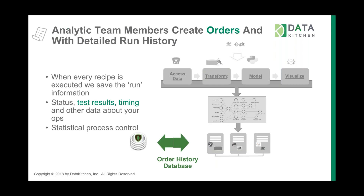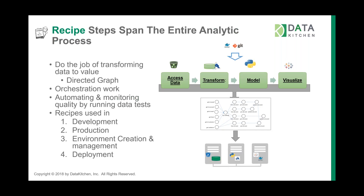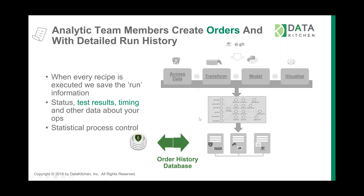When you run a recipe, you create an order, and that order is stored in a Mongo database. The recipe itself comes from Git — it's stored in GitHub Enterprise — and if it has Docker containers, those come from one or more Docker hubs. The order is a document in Mongo that stores the running results: timing results, test results, any metadata. It doesn't store data; it stores metadata about the run. Because we keep track of those over time, that allows you to look at patterns and statistics of what happens with your data.